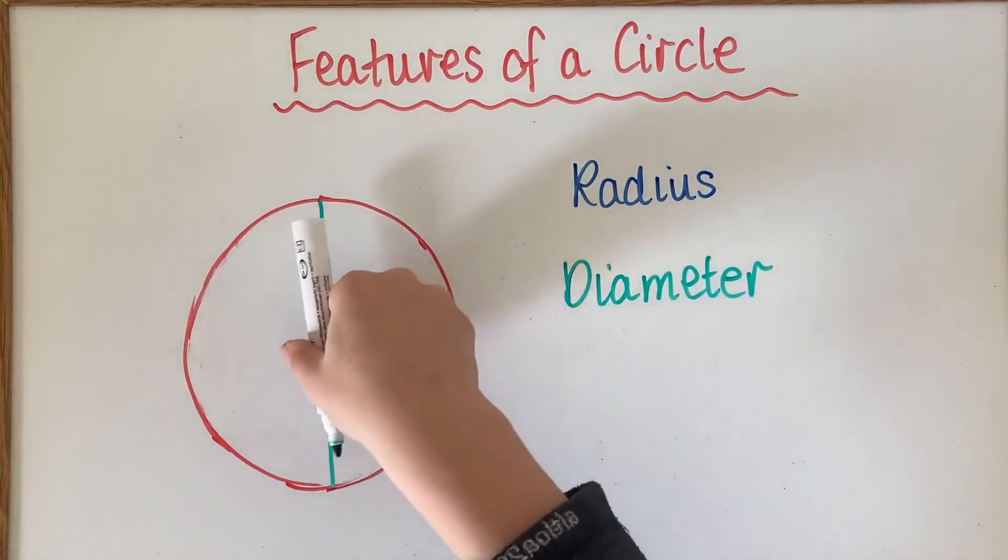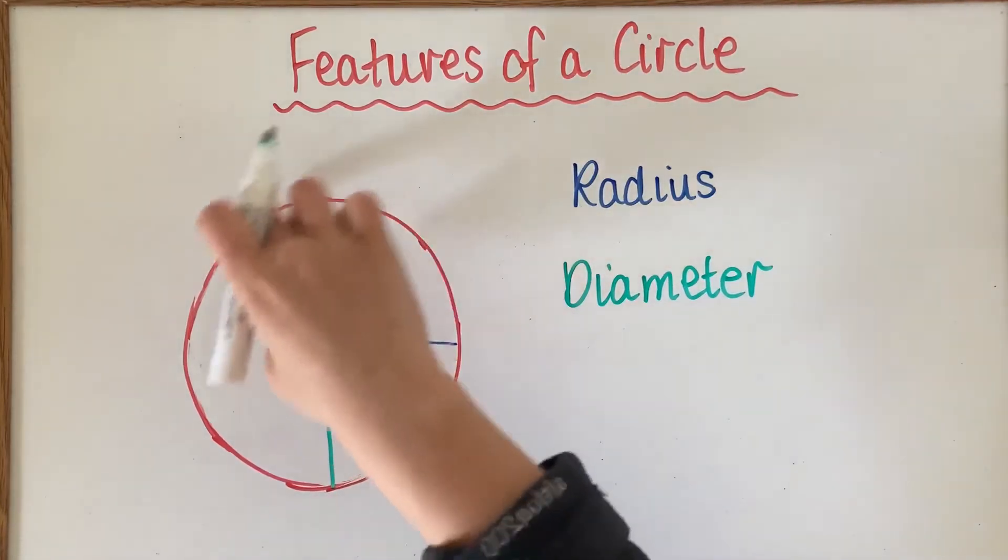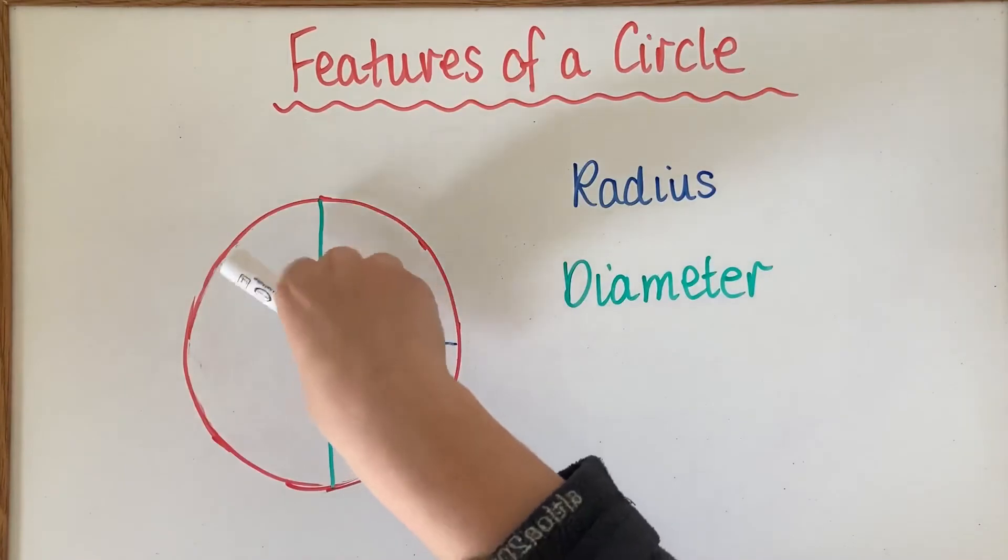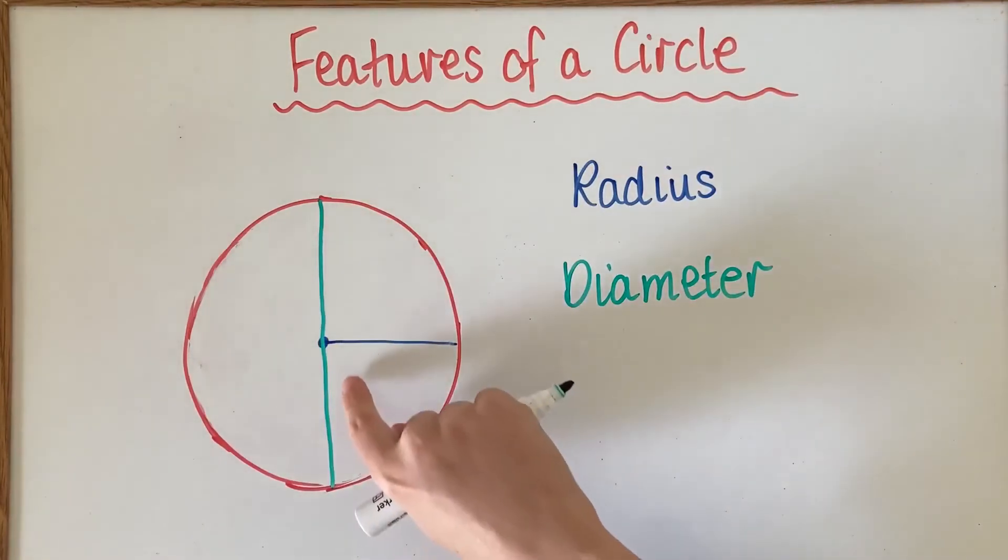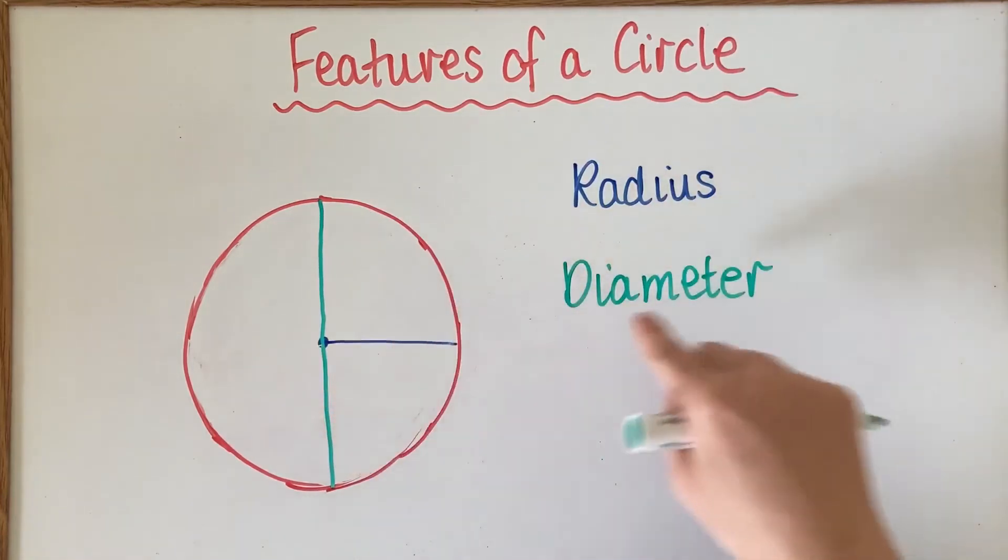It can go in any direction around the circle because a circle is the same dimension, the same width the whole way around, but the difference between the radius and the diameter is that the radius is only halfway and the diameter is the whole way across.